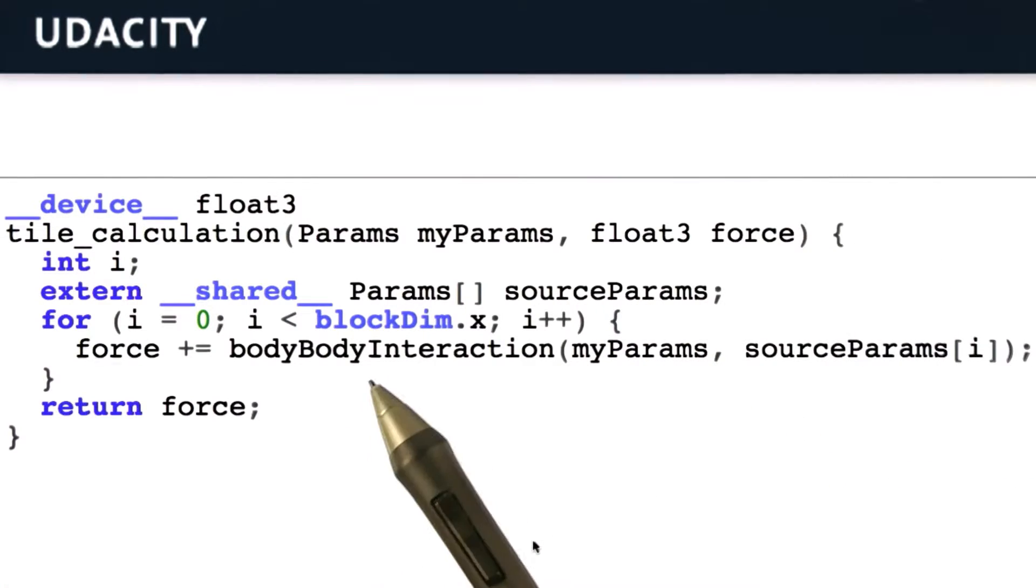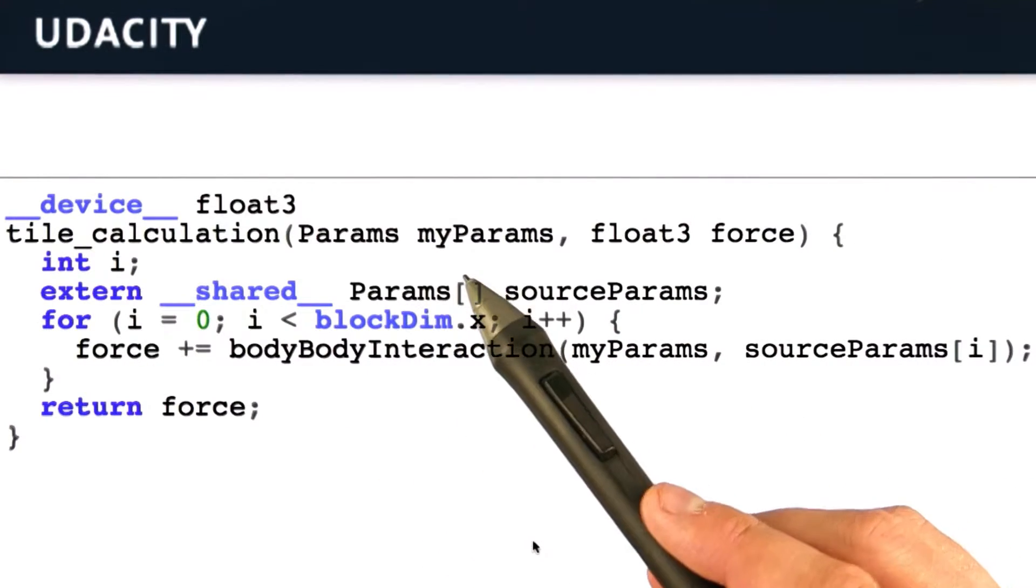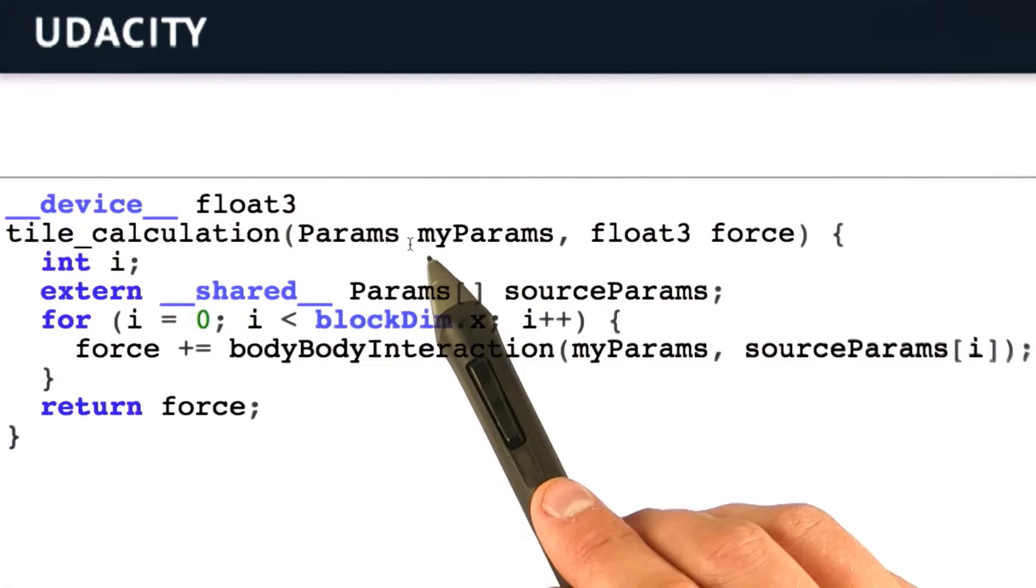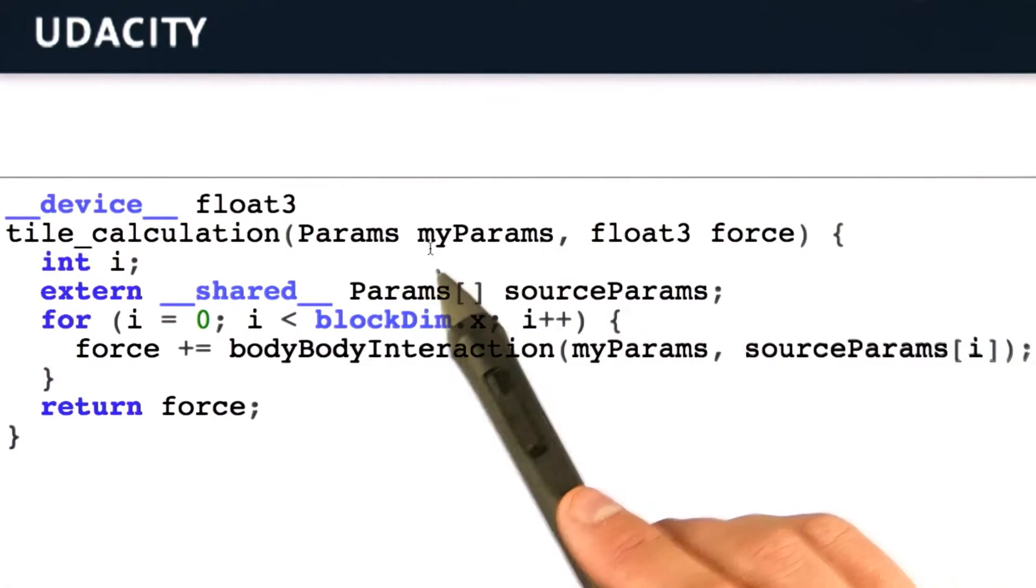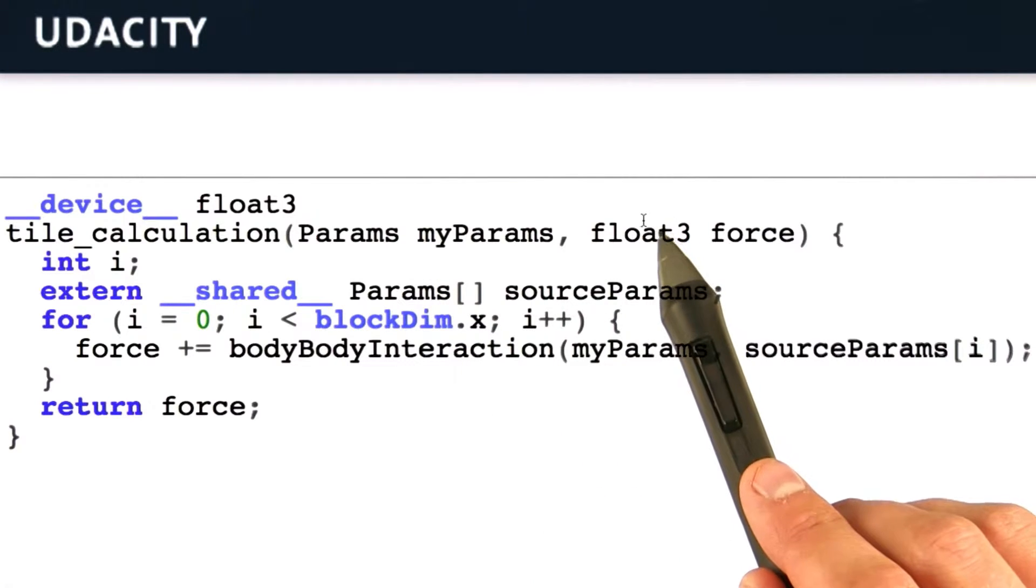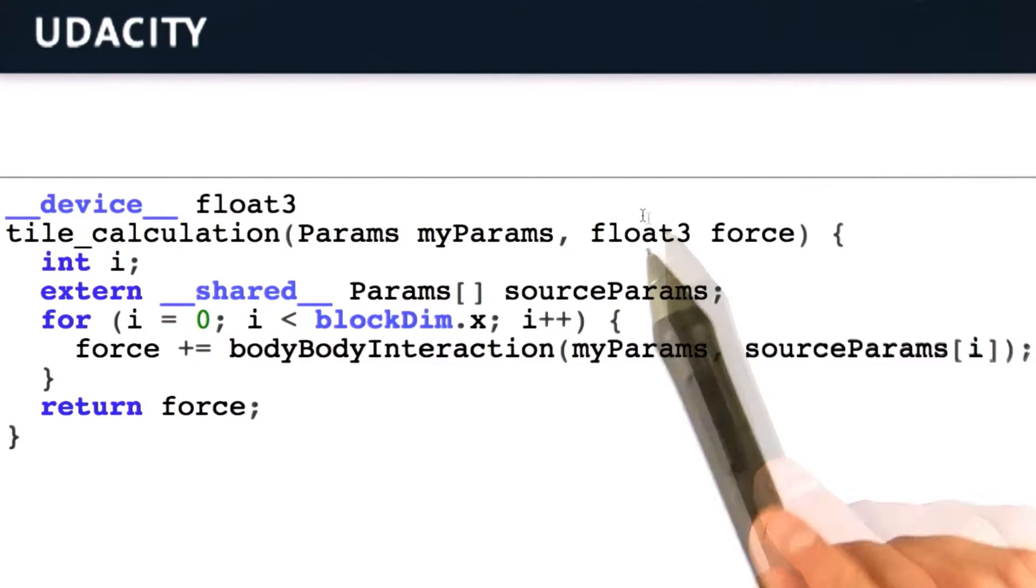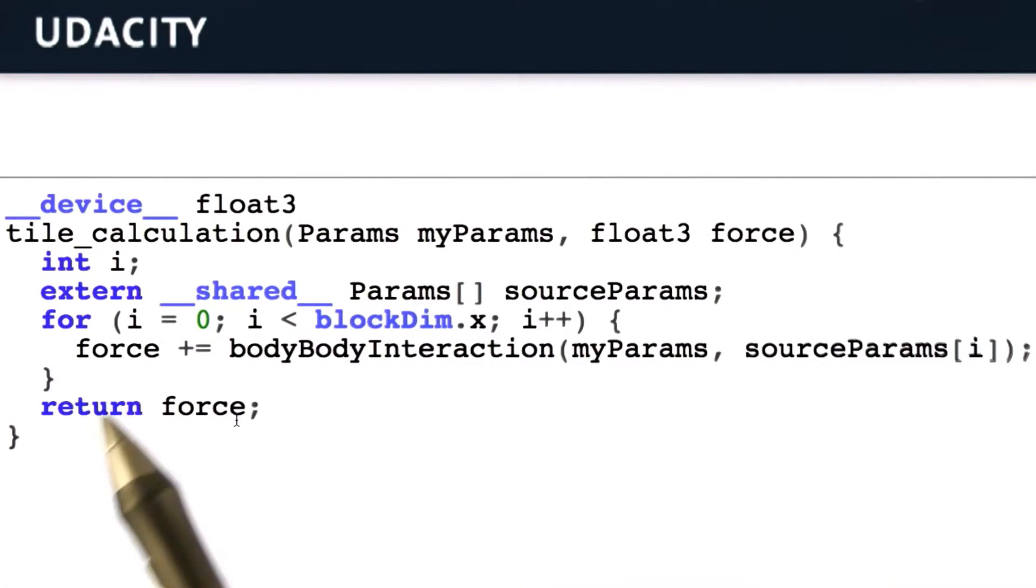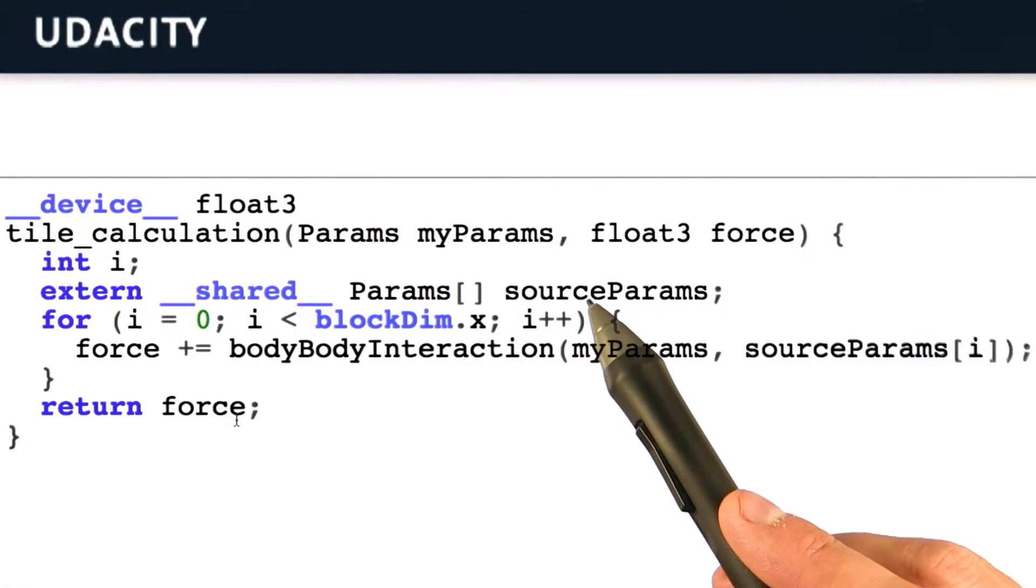What's happening in this code? The input to the kernel is my parameters, those associated with my destination object. Those would be your position and your mass or your charge, and the accumulated force that has acted on my object so far. The output will be the accumulated force after I add in p more interactions, one for each of the source objects with which I'm interacting.